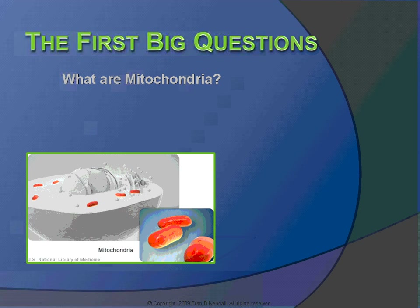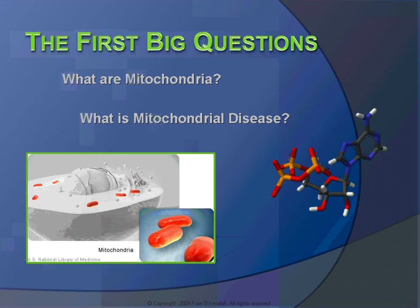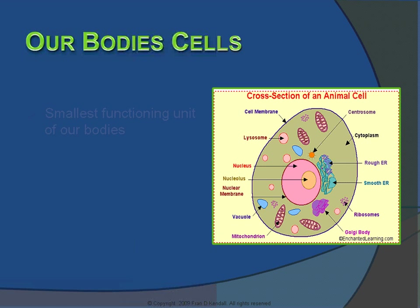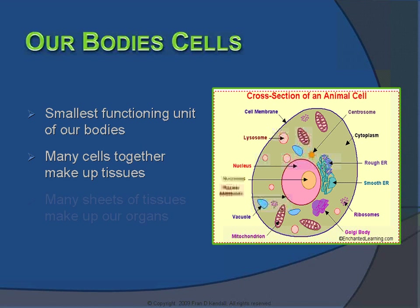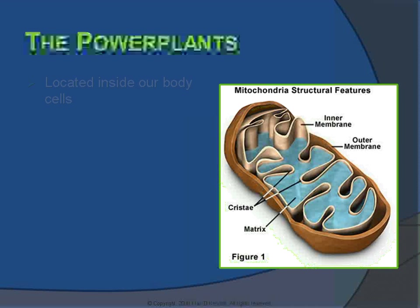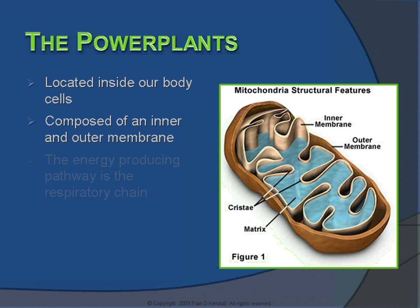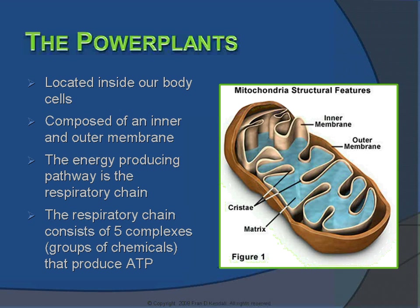The first big questions that arise when discussing mitochondrial disease are: what are mitochondria, and what is mitochondrial disease? We have to begin with our body cells, the smallest functioning units of our bodies. Many cells together make up tissues, and many sheets of tissues make up our organs — such as our skin, heart, lungs, muscle, and kidneys. The power plants of our body cells, otherwise known as the mitochondria, are located inside our body cells.